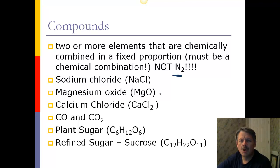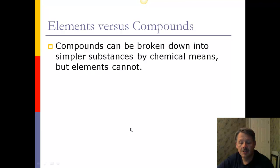These are just a small number of many, many compounds. But you'll notice they are all at least two or more elements, and they are in a fixed proportion. For example, here you've got one calcium and two chlorines, so it's a fixed proportion. Down here with plant sugar or glucose, you have six carbons, 12 hydrogens, six oxygens. Fixed proportions.